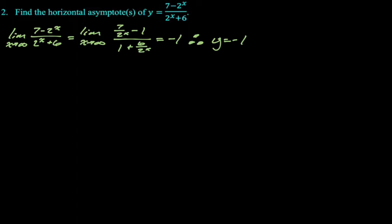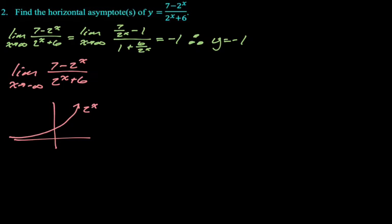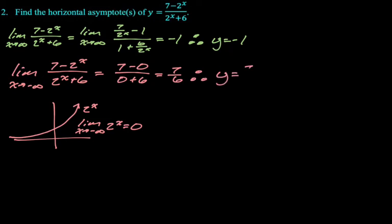Now, to negative infinity, I often do this problem by just considering the graph of 2 to the x, right? So our graph of 2 to the x looks like this. From that graph, you can definitely see that the limit as x approaches negative infinity of 2 to the x is just 0, right? So if that's the case, then the limit as x approaches negative infinity of the thing we are given, 7 doesn't care, you get 0, and then 6 doesn't care, right? There's no x's, so x can do whatever it wants. So we just get 7, 6, which means y equals 7 over 6 is our horizontal asymptote.